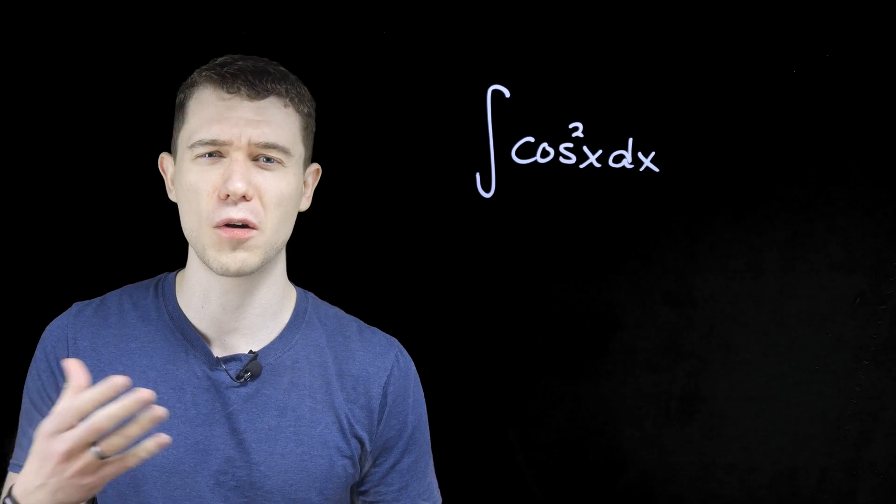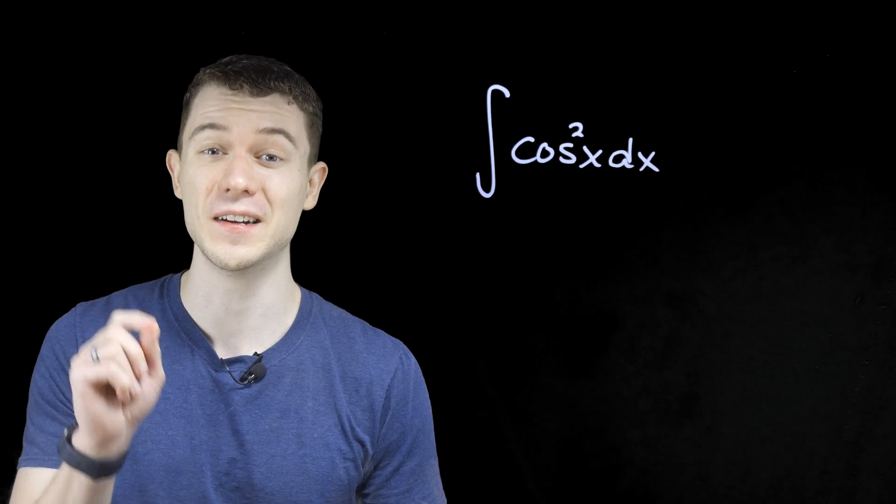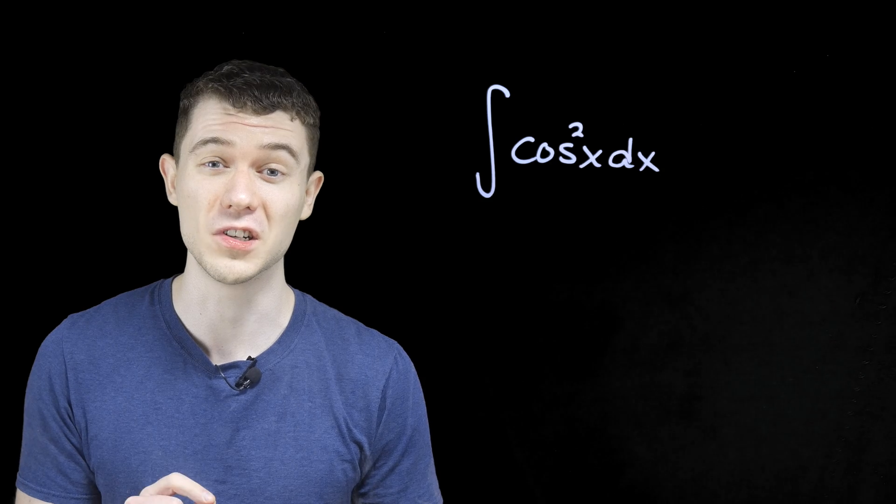Adding 1 to the power, dividing by the new power. Cosine cubed over 3 is not the answer. That only works for polynomial functions.